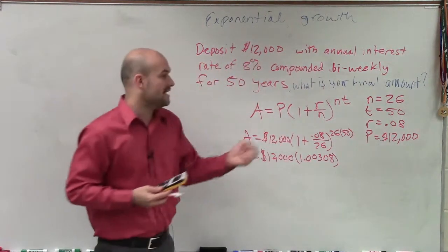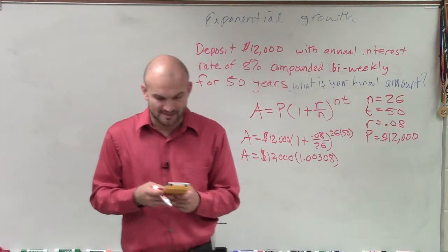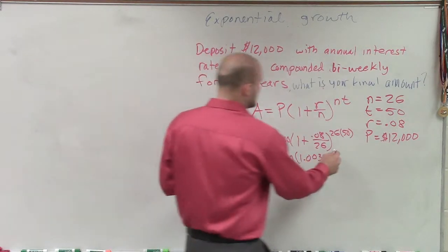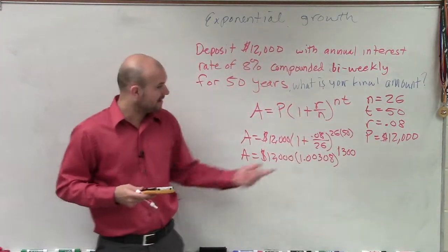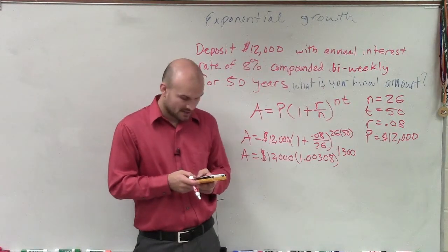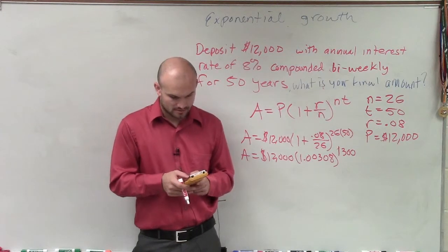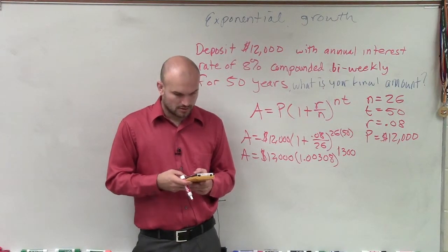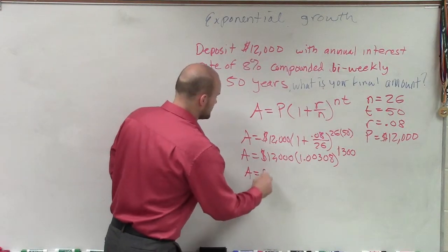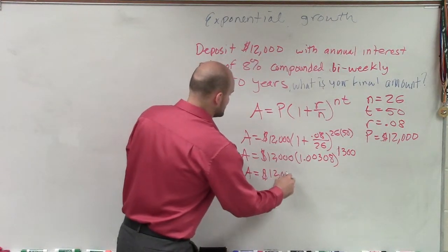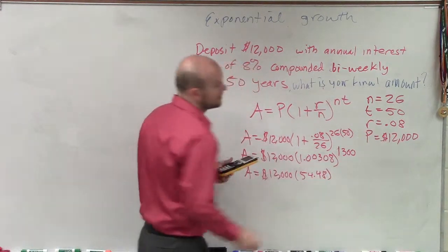So I have A equals 12,000 times 1.00308. I'm rounding that. Then I can raise it to the power, which is how I can simplify the power. So I can do 26 times 50, which is 1,300. So now I need to apply actually that power. So I do 1.00308 raised to 1,300.